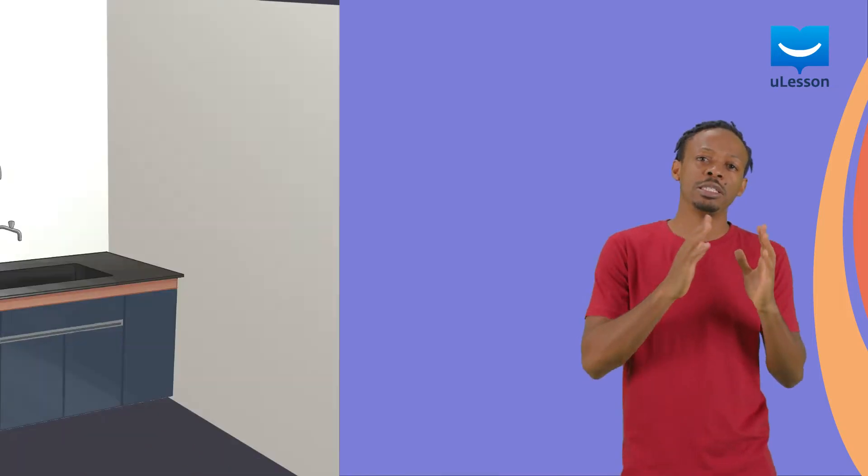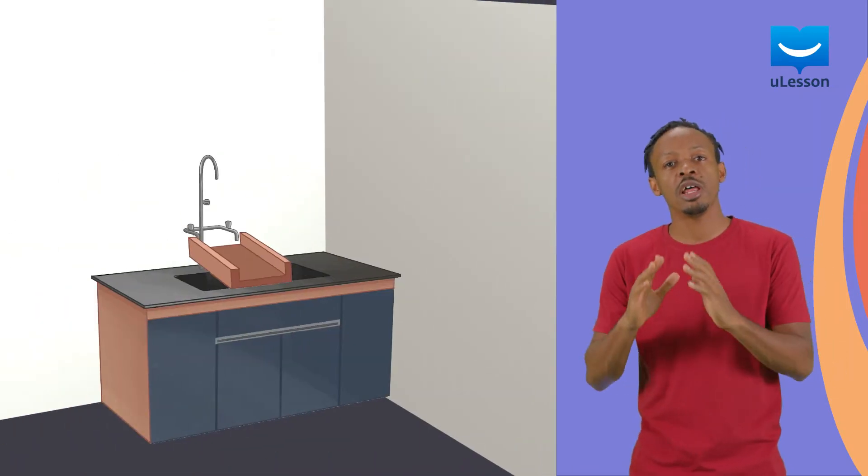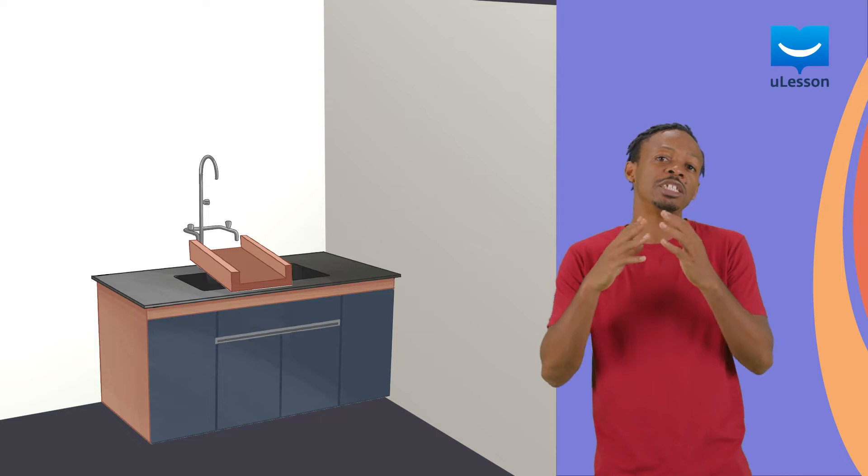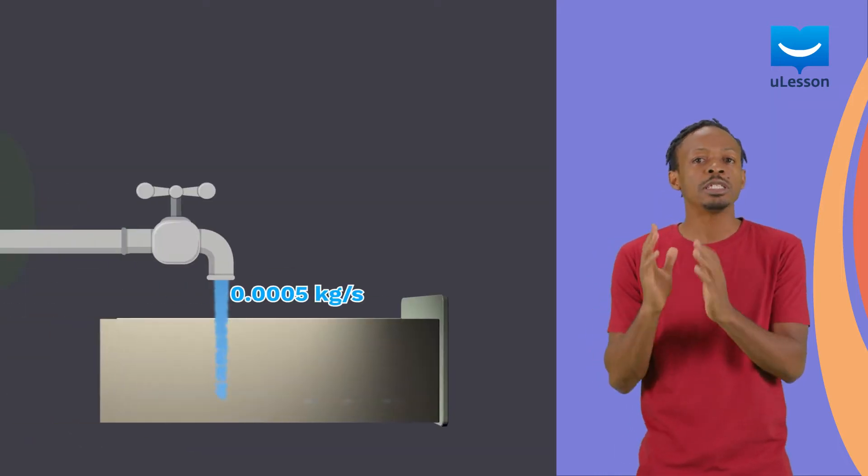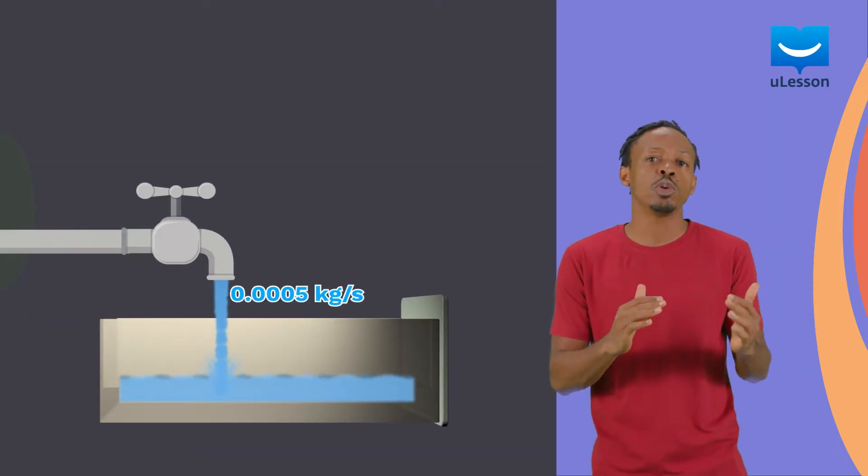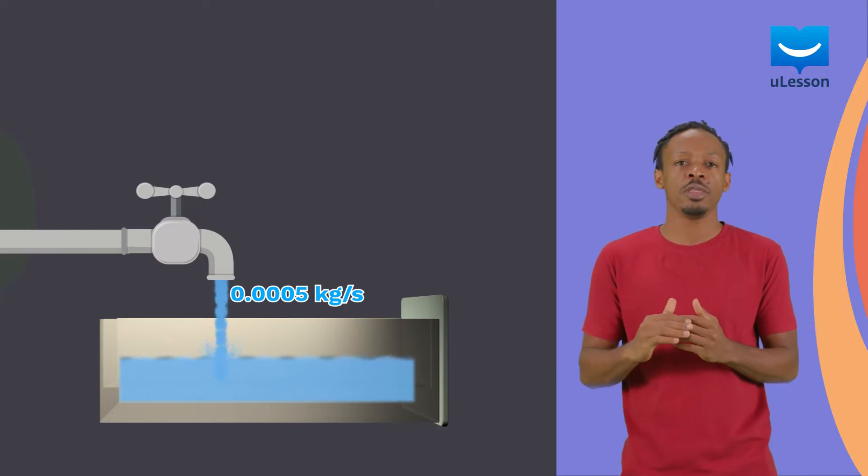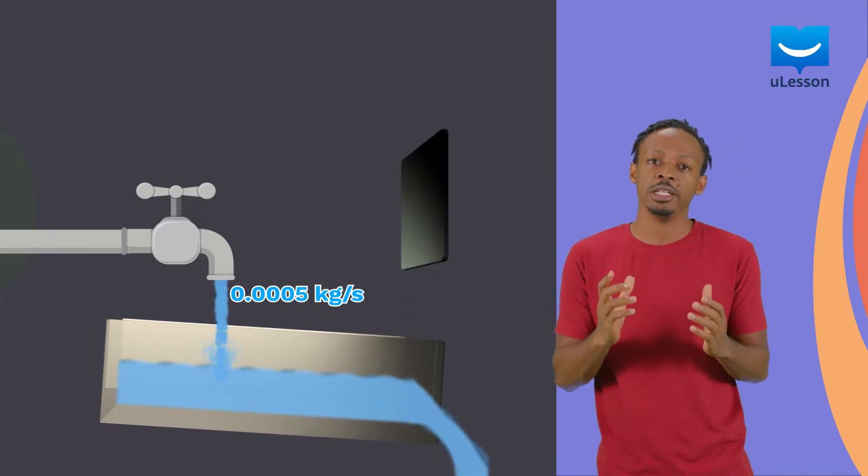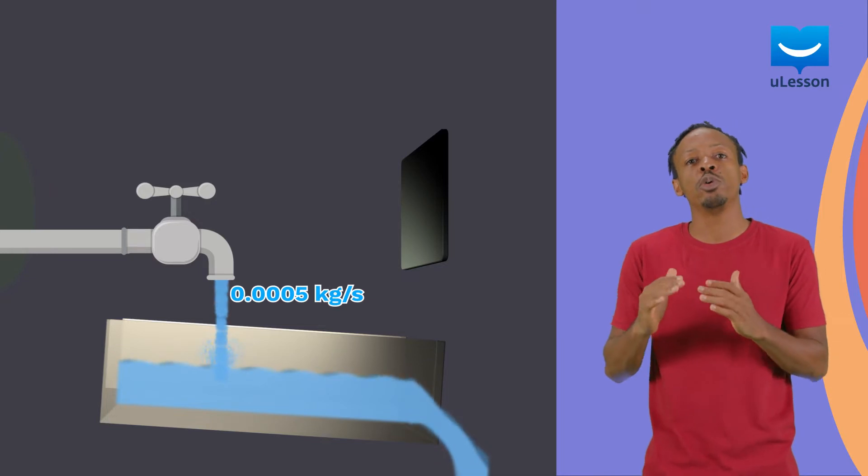A simple experiment can be set up to observe this. All that is required is a tap and a rectangular open pipe called a channel. Open the tap to make the water flow to at least half the capacity of the channel and tilt the channel slightly to allow the water to flow evenly.